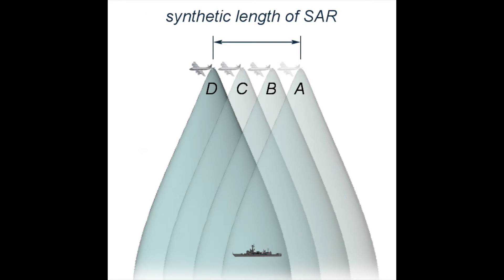In this image you can see that the radar device has been attached to a moving aircraft. As the aircraft moves, signals are transmitted and received at various intervals. The received signals are stored and processed through an imaging algorithm. This technique is known as synthetic aperture radar, or SAR, and it allows for a high-resolution image to be generated through the use of a single radar system.